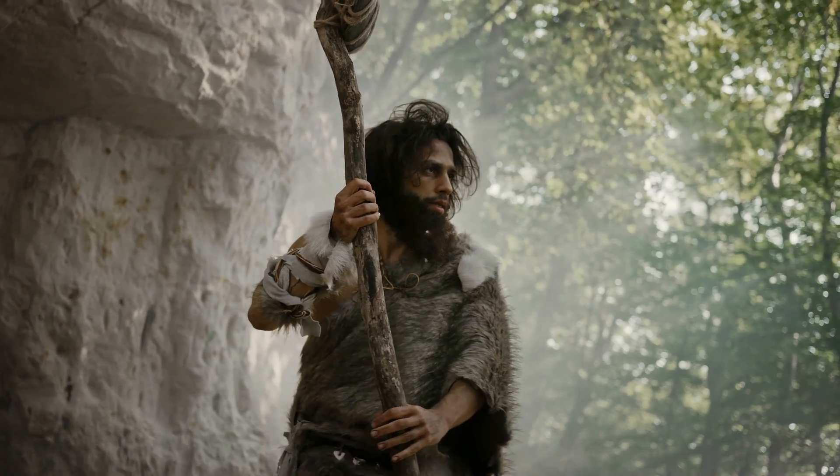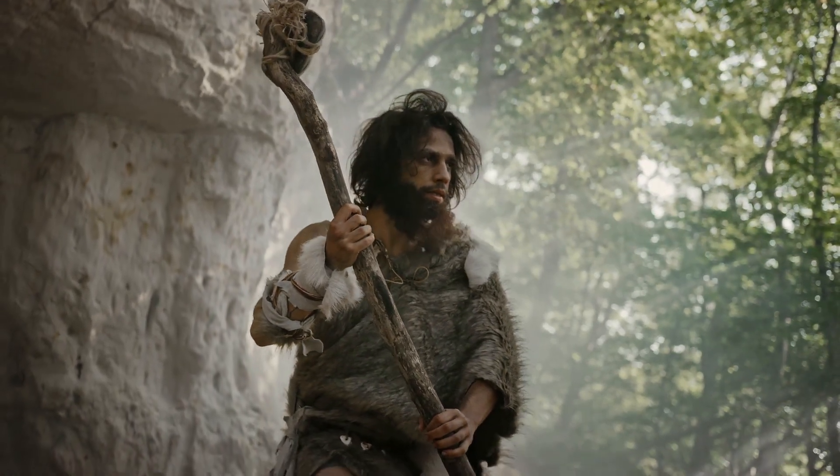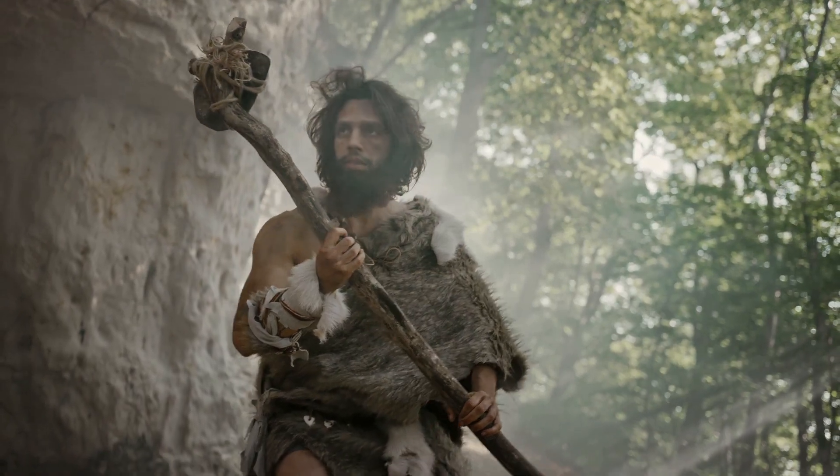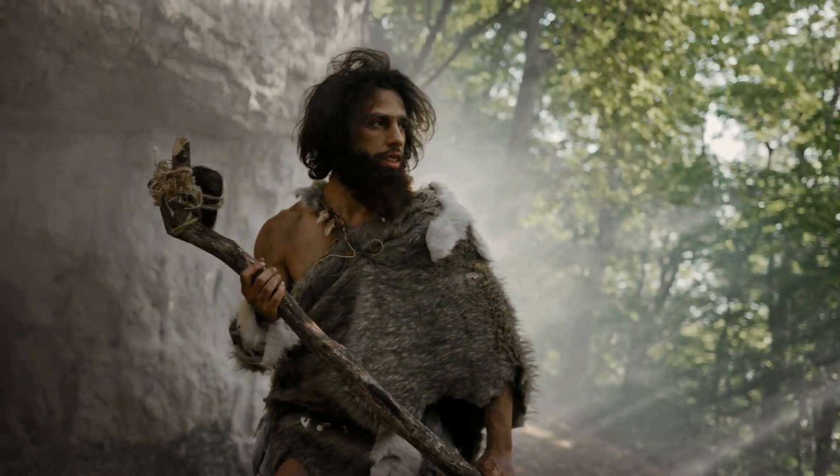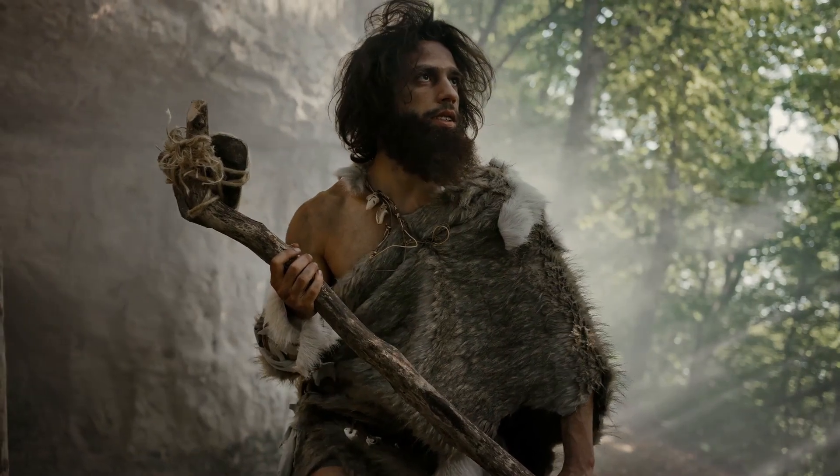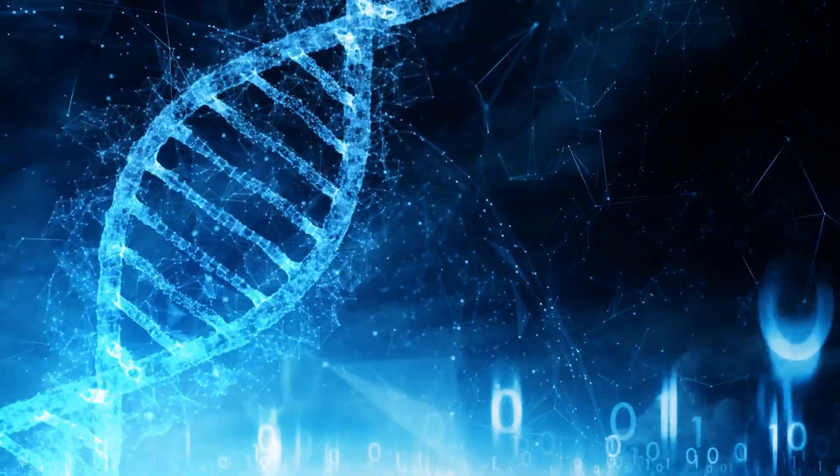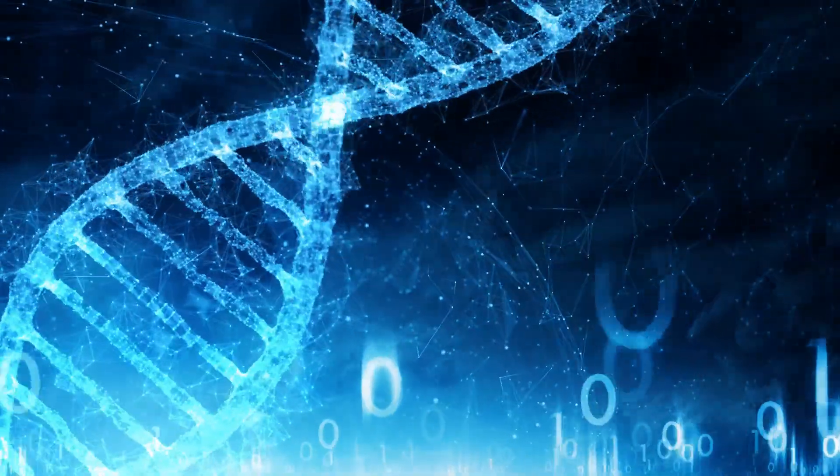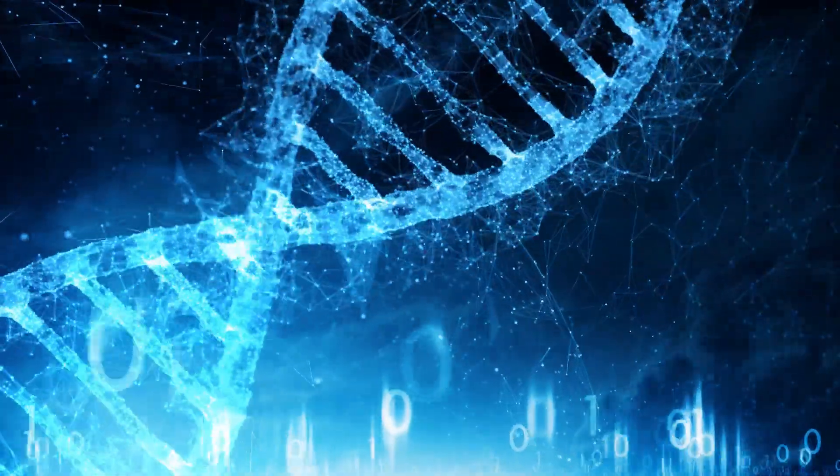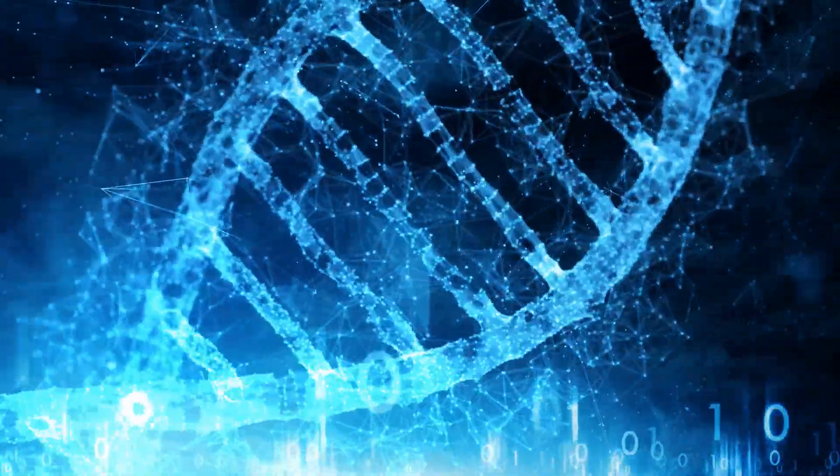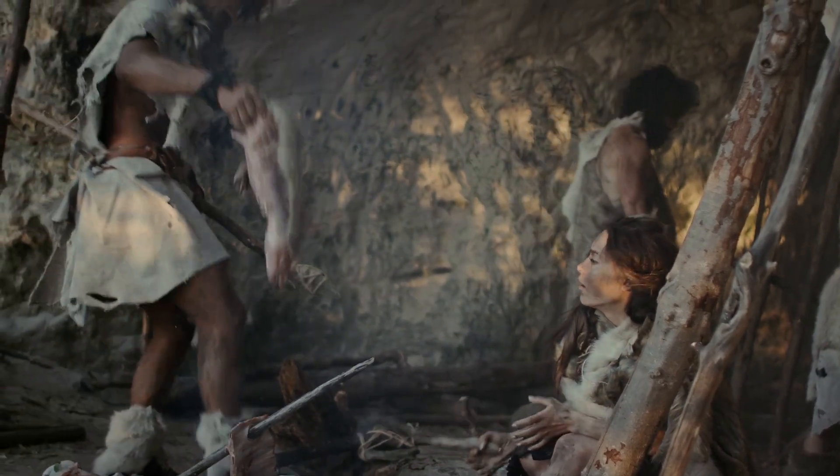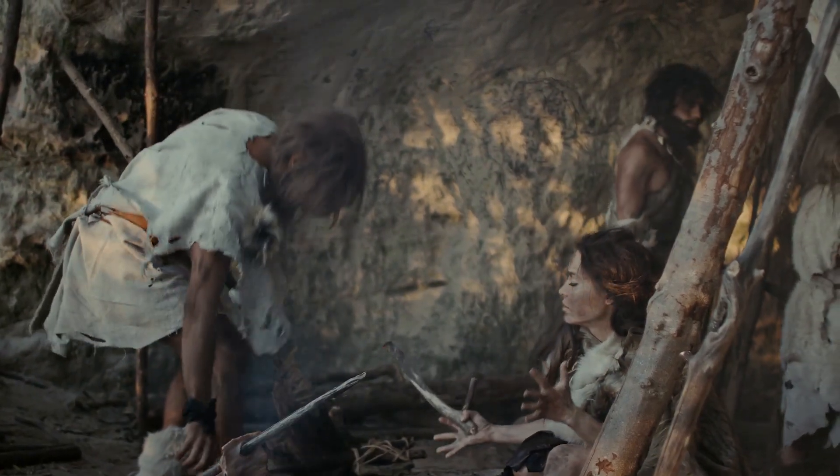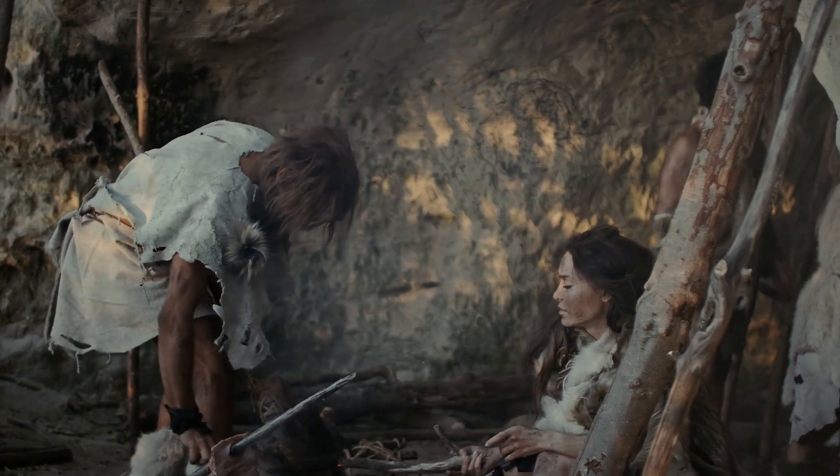When modern humans began migrating out of Africa about 70,000 years ago, they encountered Neanderthals in Europe and Asia, with the first encounters thought to have occurred in the Middle East. Although it is impossible to tell exactly how these interactions played out, we now know that these interactions went beyond simple day-to-day encounters. The genetic evidence points to a more intriguing possibility – Neanderthals and anatomically modern humans interbred.